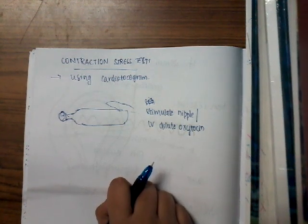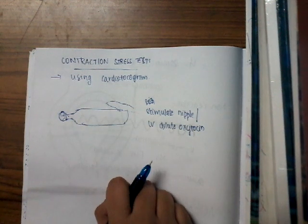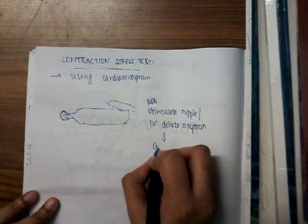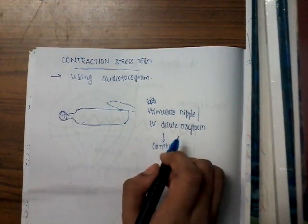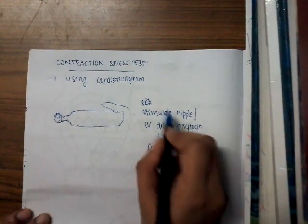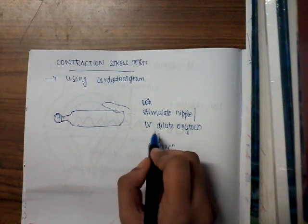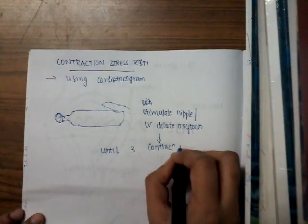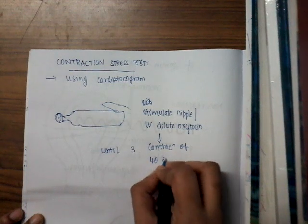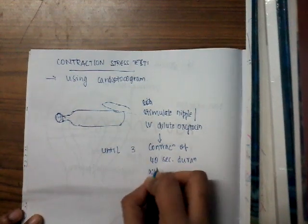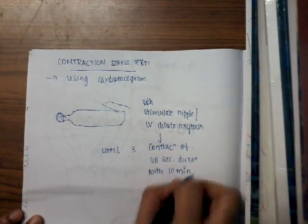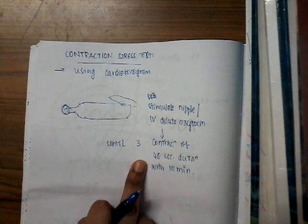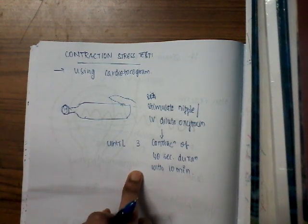Once we either stimulate the nipple or give IV dilute oxytocin, these will induce contractions. This stimulation is continued until there are at least three contractions of 40 seconds duration, and these contractions should occur within 10 minutes. So we need at least three contractions, each lasting 40 seconds, within a 10-minute window.